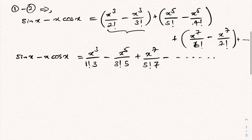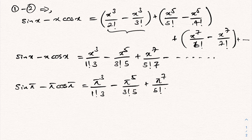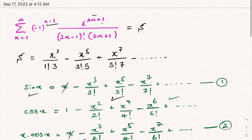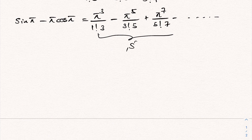Now I'm going to plug in π instead of x. So sin(π) minus π·cos(π) equals π³ over (1! times 3) minus π⁵ over (3! times 5) plus π⁷ over (5! times 7) minus so on. We can see that this right-hand side is exactly our summation S.